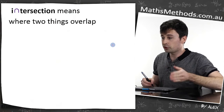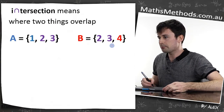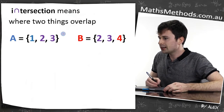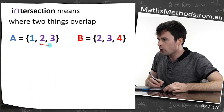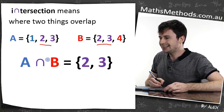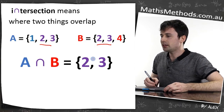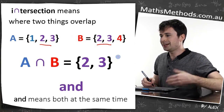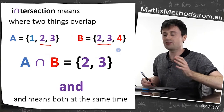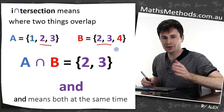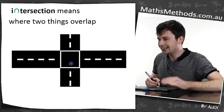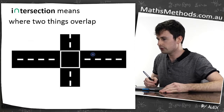Intersection means where two things overlap. If we've got A and B, we can see there's a bit of overlap — they both have a two and three in them, so A intersection B is {2, 3}. Intersection means 'and', and 'and' means both at the same time — just like a road intersection where they're overlapping.